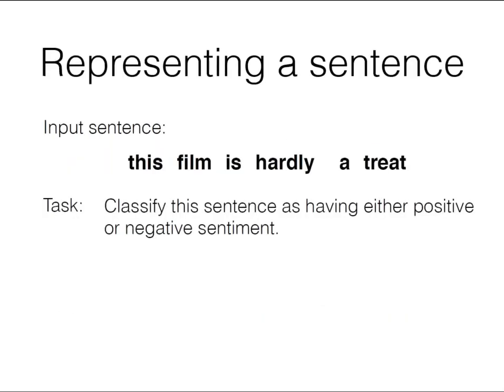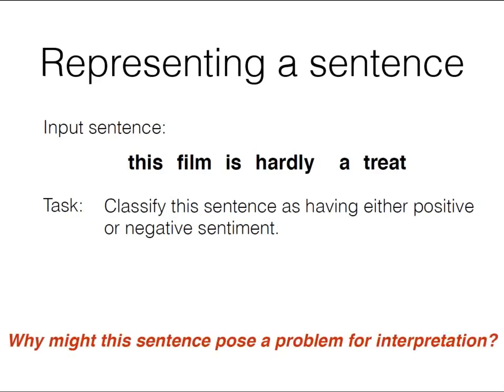Let's go back to the task of representing a sentence as a vector — basically what you started in practical one with documents. Imagine the task is to take a sentence from movie reviews and classify it as positive or negative: sentiment classification. Consider: 'This film is hardly a treat.' Can someone tell me why I picked this sentence? From a naive standpoint it looks positive — there's nothing that jumps out as overly negative. But we'd all agree that's not a positive sentence.